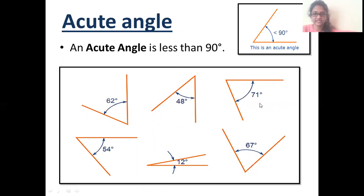62, 48, 71, 67, 12, 54. All these are less than 90 degrees. So, these can be categorized under acute angle.